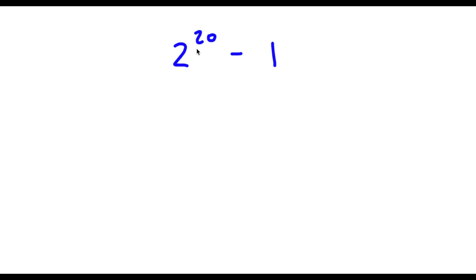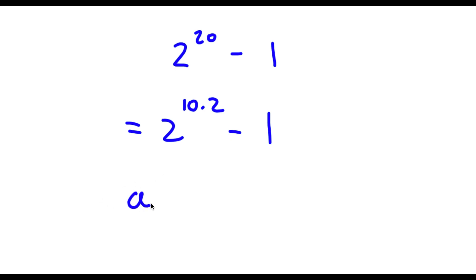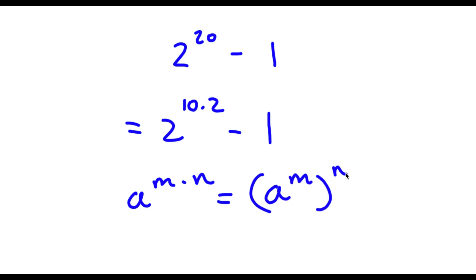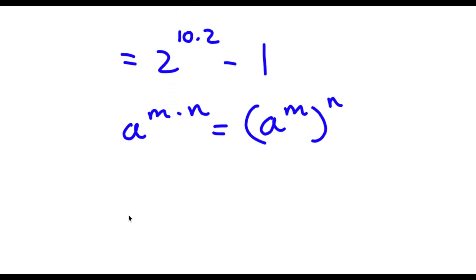Alright, so now I have 2 to the power of 20 minus 1. Now 20 here, we can rewrite this as 10 times 2. So now I have 2 to the power of 10 times 2, minus 1. Now if I have something in the form a to the power of m times n, this is the same thing as a to the power of m to the power of n. So 2 to the power of 10 times 2 equals 2 to the power of 10 to the power of 2. Now I have this minus 1.